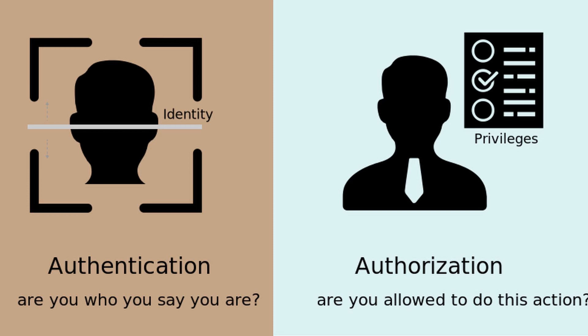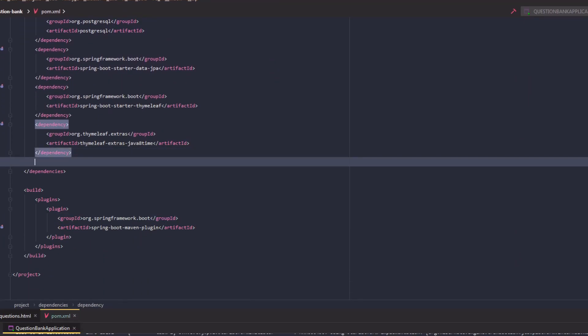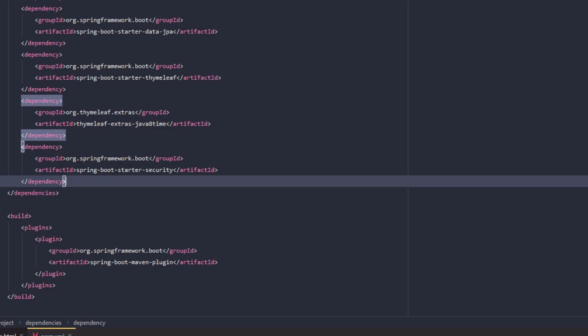For example, in our application, we can have two users: User 1 with admin privilege and User 2 with a normal user privilege. Though both are valid users who can log into our application, only the user with admin privilege should have access to modify the data, and the normal user should only be able to view the data. To secure a Spring Boot application, all we need to do is simply add the Spring Boot Starter Security dependency in the pom.xml. If a Spring Security dependency is added on the classpath, form-based and HTTP basic authentications are enabled for all requests by default.